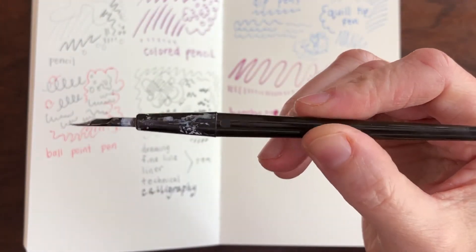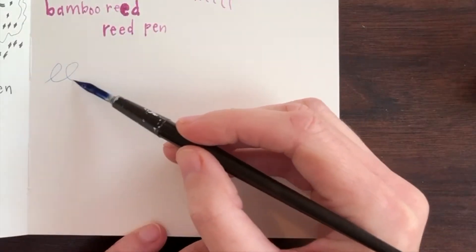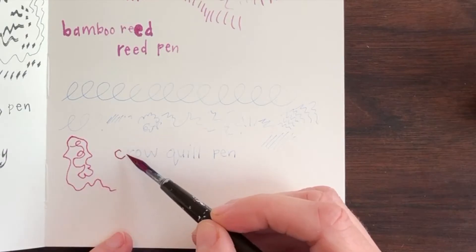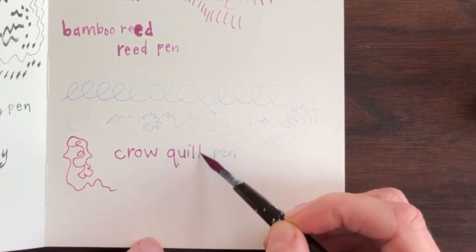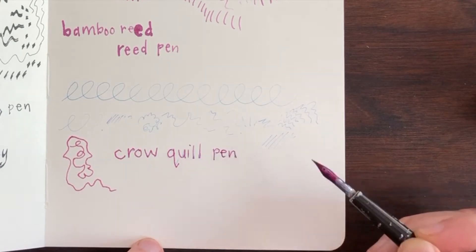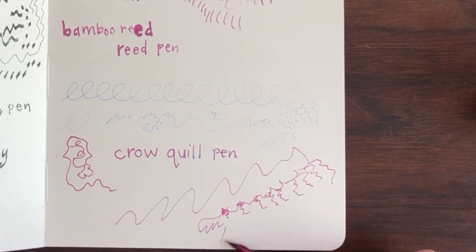This is the last dip pen I'm going to show you and like the quill tip pen it's also metal and has a little split in the middle. This one is called a crow quill pen. Because this line is so thin it's good for little tiny details.